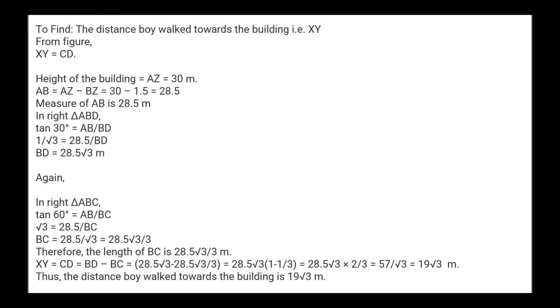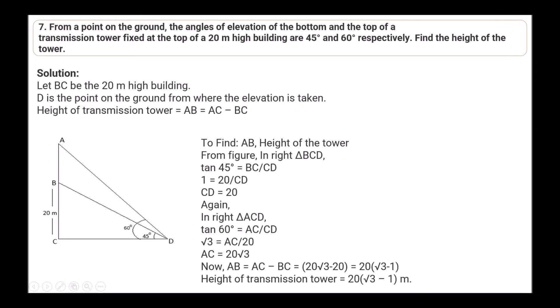In right triangle ABD: tan 30° = AB/BD, so 1/√3 = 28.5/BD, giving BD = 28.5√3 meters. In right triangle ABC: tan 60° = AB/BC, so √3 = 28.5/BC, giving BC = 28.5/√3 = 28.5√3/3 meters. XY = CD = BD − BC = 19√3 meters. The distance the boy walked towards the building is 19√3 meters.